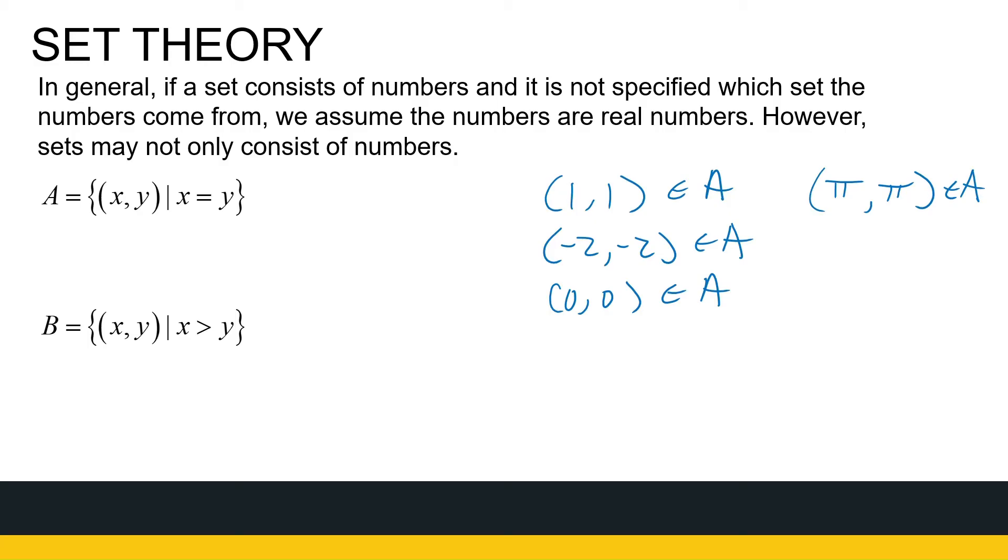B is a set of ordered pairs where the X portion is bigger than the Y one. Well, then I know 5, 1 must be an element of B, because this one must just be bigger than this one. Minus 7, minus 10. Now, you've just got to think about this one a bit. Is minus 7 bigger than minus 10? Yes. Let's do the right of the number line. So, that's an element of B. 0, minus 1 is an element of B. 10, 0 is an element of B, as long as that first entry is larger than the second one. So, those are sets of ordered pairs.